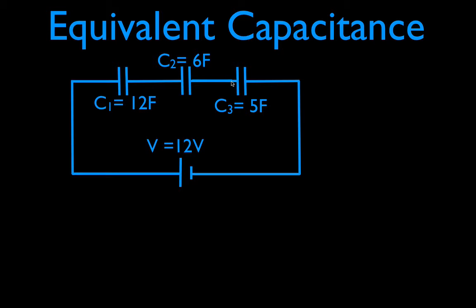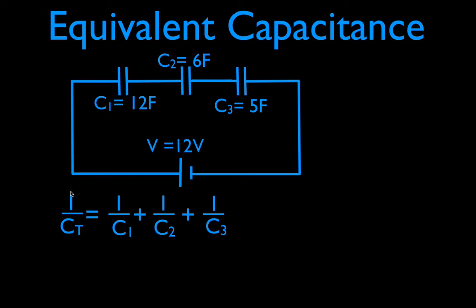The thing you have to know for this is the equation. 1 over the equivalent capacitance is equal to 1 over the capacitance of number 1, plus 1 over the capacitance of number 2, plus 1 over the capacitance of number 3. That's the equation you need to know, and all you need to do now is plug in the numbers.